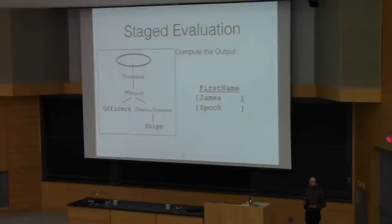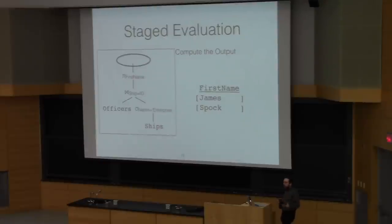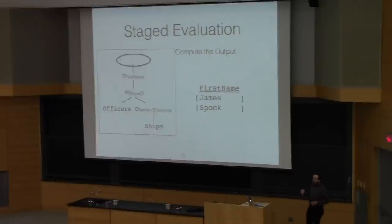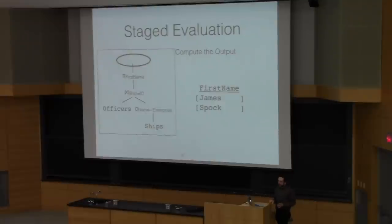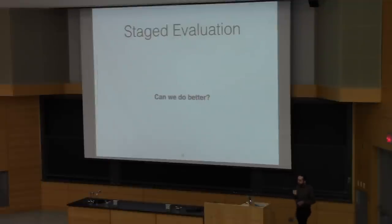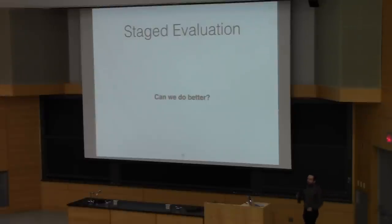This is a very straightforward evaluation strategy. Every single operator represents one whole transformation performed on an entire collection. You can think of this as a program: first ships, then select, then officers, then join, then project. At every stage I have a couple of different collections to work with. So, can we do any better than that? Do you see anything we can improve on in this design?